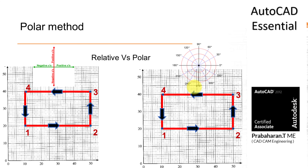Let us discuss the difference between the relative method and the polar method. Relative means from the previous point, what is the x distance and y distance — we consider whether we are going in a positive or negative direction, and specify values accordingly. Instead of positive/negative, in polar we use angle values. Both methods draw straight lines easily. But if you have an inclined line, we need to find the angle using the polar method.